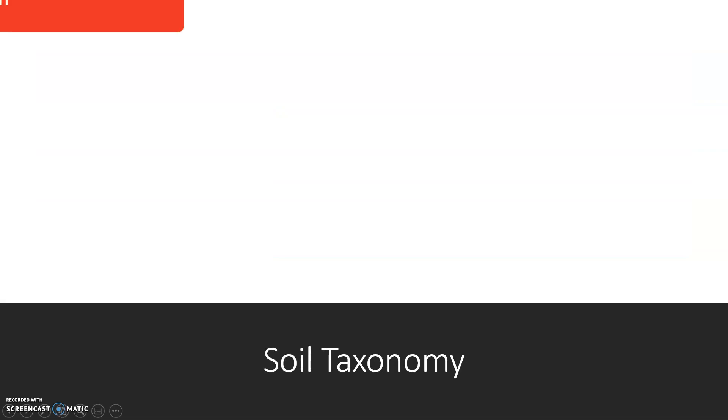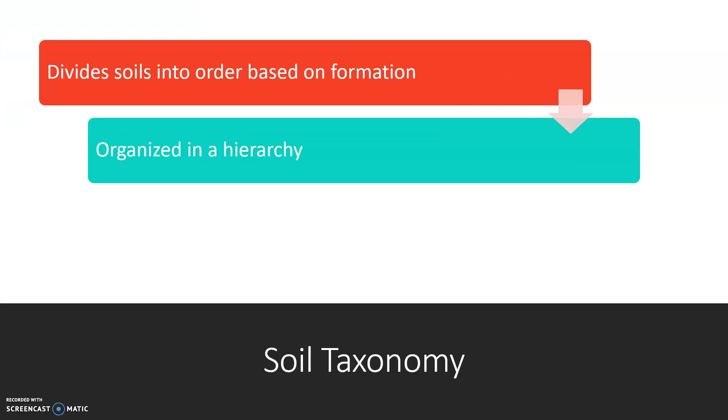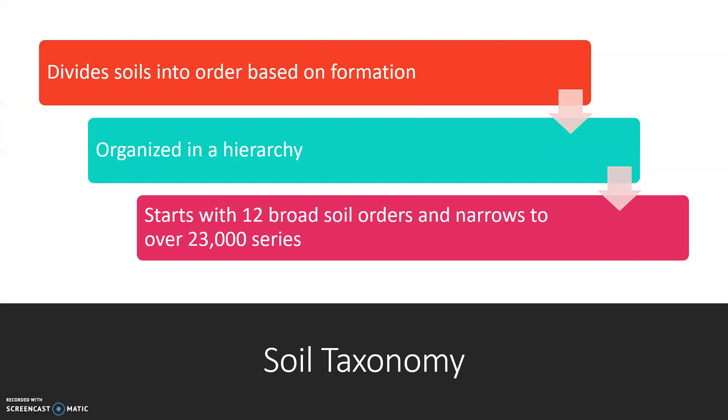Soil taxonomy divides soils based on formation. Soils are organized in a hierarchy that starts with 12 broad soil orders and narrows to over 23,000 soil series.